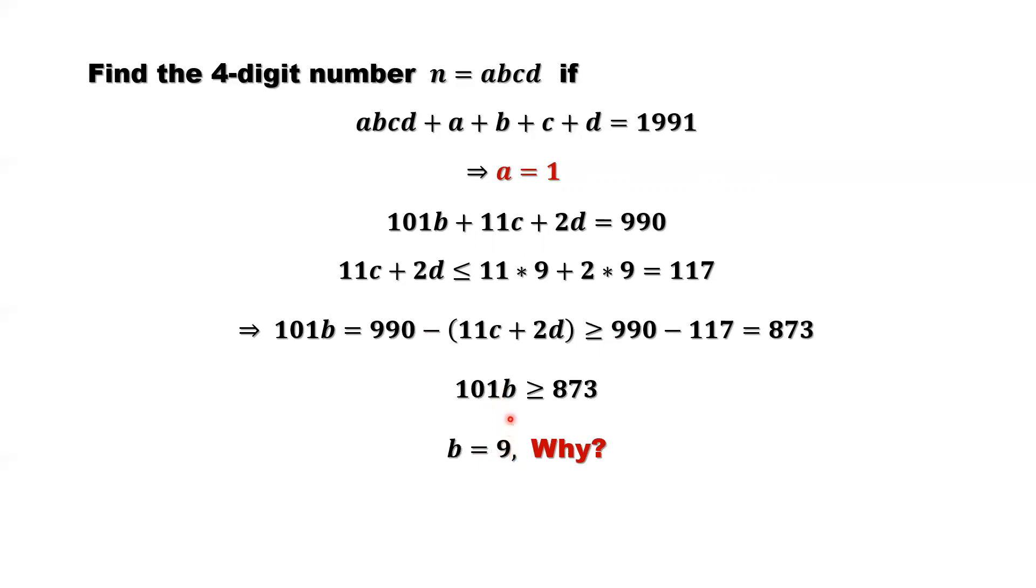This B should be 9. Why is 9? The maximum B value is 9. Cannot be lower than 9. If it is 8, what will happen? If it is 8, look at this inequality. If it is still true. If it is 8, 8 times 101, that's what? 808. 808 is not bigger than or equal to 873. So it cannot be 8. Also we can say that B cannot be below or equal to 8. So that's the reason why B equals 9. So now we find the second number. B equals 9.